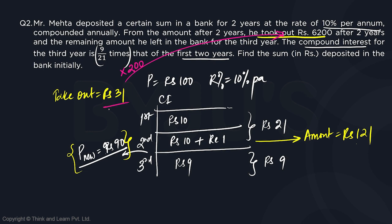So if the amount he takes out is 200 times, that means every value in this particular assumption is going to be 200 times. Since the question asks us to find the sum deposited in the bank initially, the initial principle,